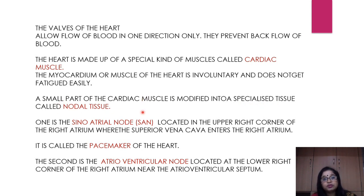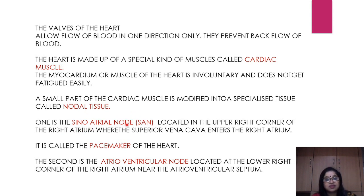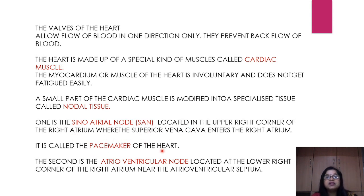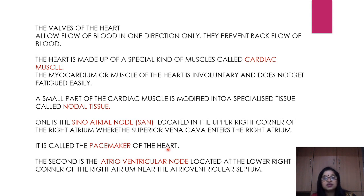The nodal tissue is very important. One node is called the sinoatrial node — the SA node — located in the upper right corner of the right atrium, just where the superior vena cava enters. It is called the pacemaker of the heart because impulses sent by the SA node initiate the rhythmic beating of the heart through its conducting system.